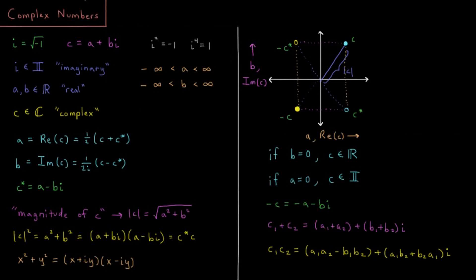This video is a review of the basic concepts of complex numbers. Complex numbers are those which involve i, which is the square root of negative 1. In general, a complex number will have some real part a, plus some imaginary part b times i, where both a and b are real numbers — real numbers being values between negative infinity and positive infinity. Multiplying a real number times i makes it an imaginary number.